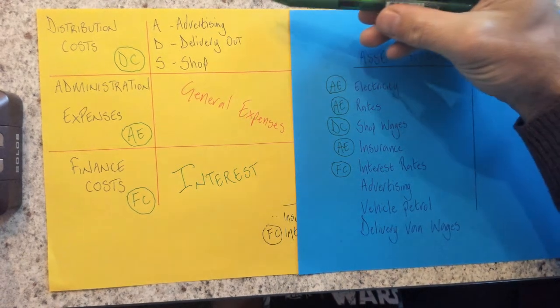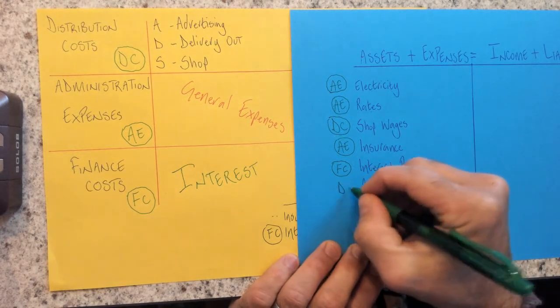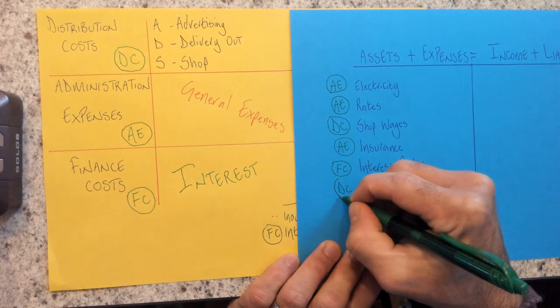Advertising. Advertising is directly a distribution cost. There we go, because that's relating to us selling our main product, whatever that might be.